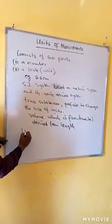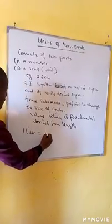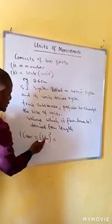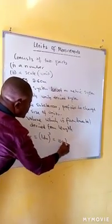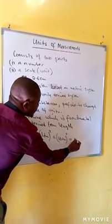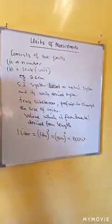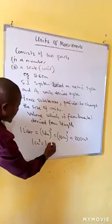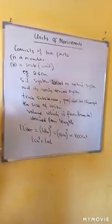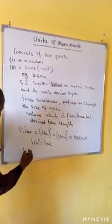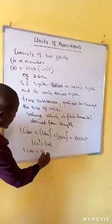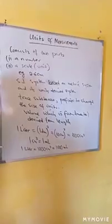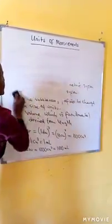We know that one liter is equal to one decimeter cubed, which is equal to 10 centimeters cubed, giving us 1000 cubic centimeters. We also know that one cubic centimeter is equal to one milliliter. So one liter is equal to 1000 cubic centimeters, which is equal to 1000 milliliters.